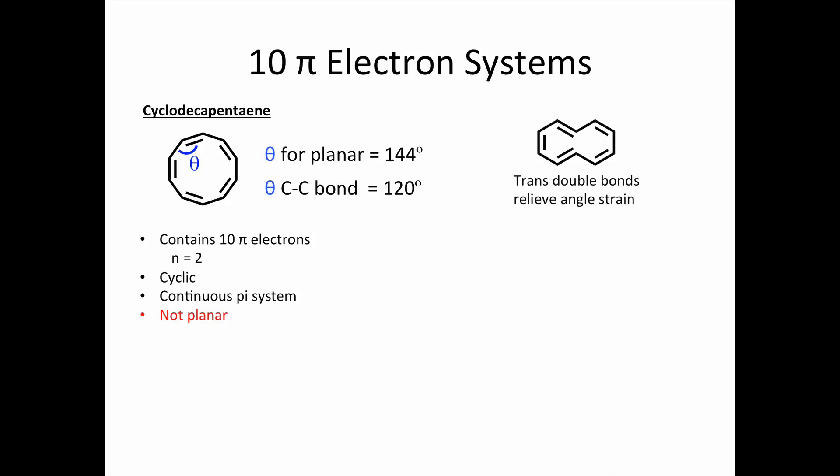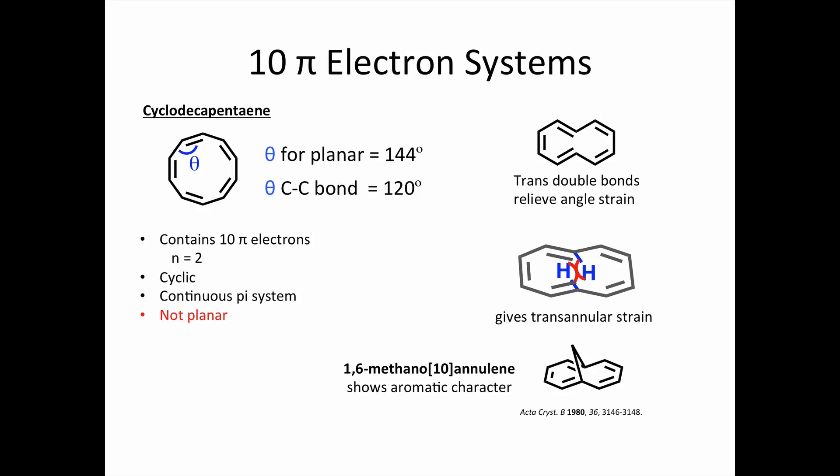Okay, so what if we introduce some trans-double bonds to relieve the angle strain? We run into a different problem here. Because the H atoms are now facing inward toward each other, they have steric clash, and this molecule is not planar either. But, if the H atoms are replaced with a methylene bridge, the steric hindrance is eliminated, and this molecule is aromatic.